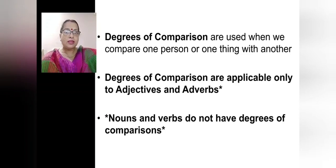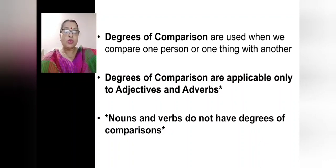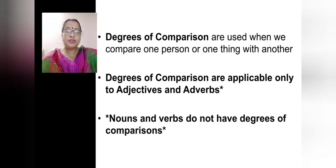The word comparison comes from the verb to compare. To compare means to measure something against something else. Degrees of comparison are used when we compare one person or one thing with another. Degrees of comparison are applicable only to adjectives and adverbs. Nouns and verbs do not have degrees of comparison. We spend a lot of time making comparisons, and to do this we use adjectives and adverbs.